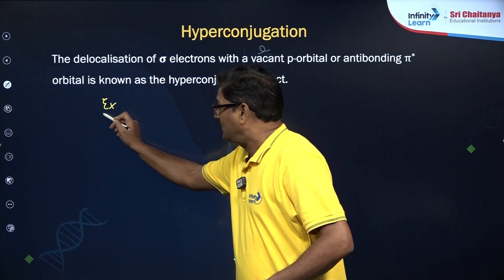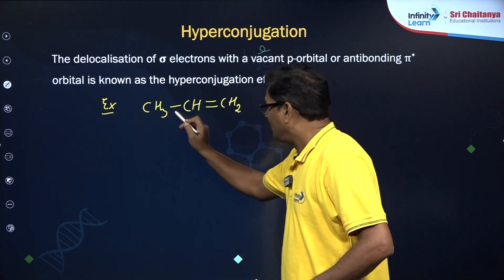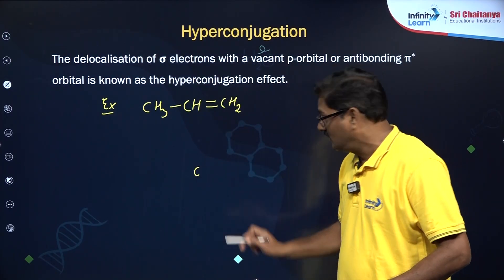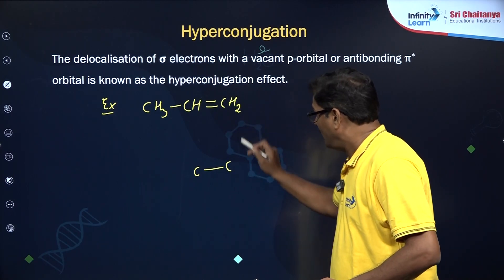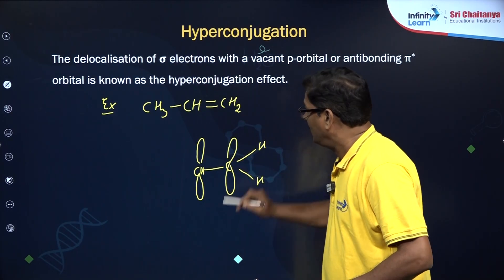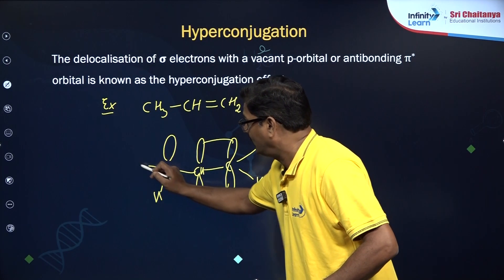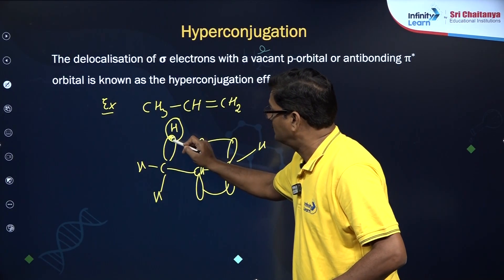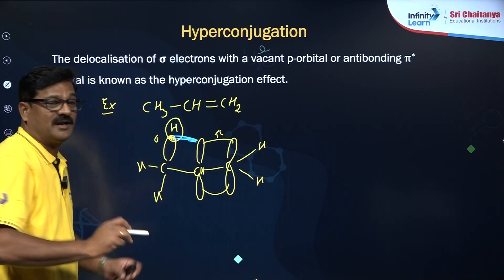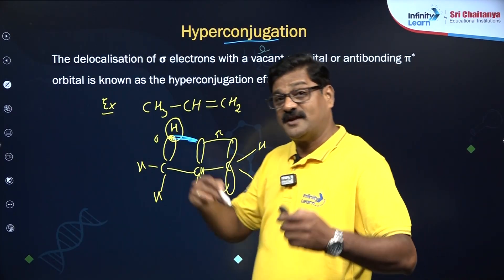Let us take an example — an alkene: CH3–CH=CH2. There is a sigma bond with respect to the SP3 hybridized carbon and the SP2 hybridized carbon. This carbon has a pi bond, and this pi bond is going to overlap with the SP3 hybridized carbon. The sigma bond and the pi bond overlap, and this overlap — indicated in blue — is called hyperconjugation.